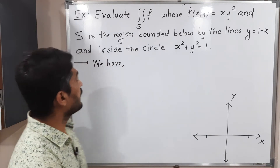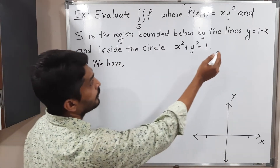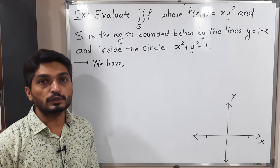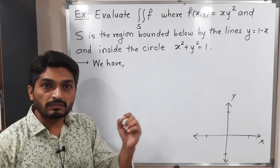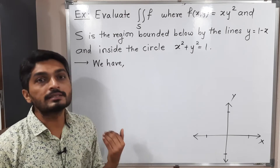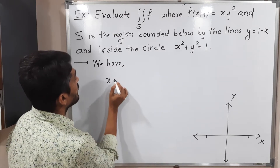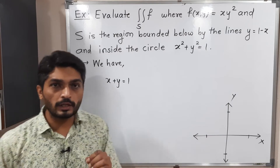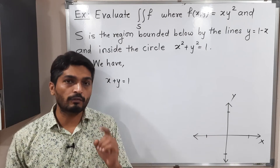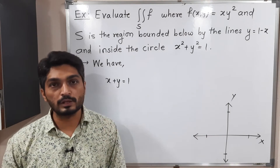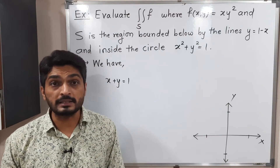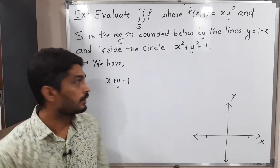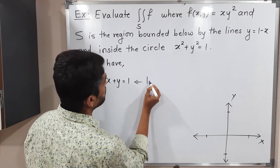We have y = 1 minus x. I will shift x to the other side, so we have the equation x + y = 1. When the power of x is 1 and the power of y is also 1, it represents a straight line. So this is a straight line — let me mention here, this is a line.